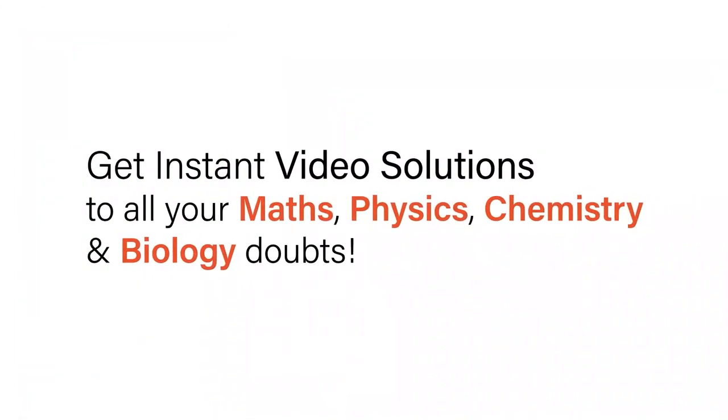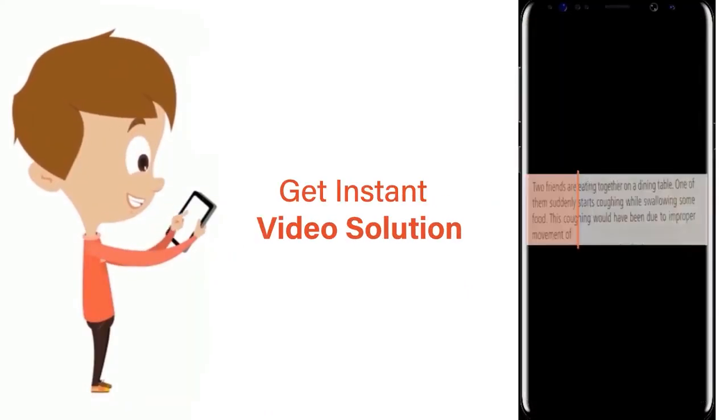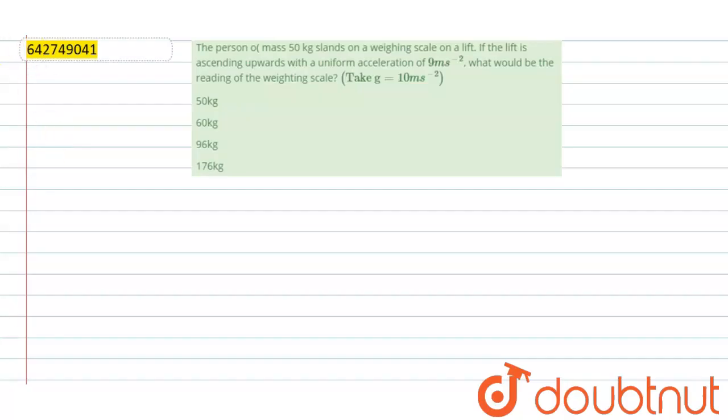With Doubtnet, get instant video solutions to all your math, physics, chemistry, and biology doubts. Just click the image of the question, crop the question, and get instant video solution. Download Doubtnet app today. Question is: the person of mass